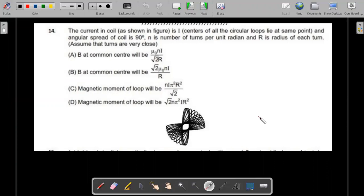For those who have already tried, here we go. There is a coil which is made of lot of circular loops whose center lie at the same point, assume that is origin. The coils keep curling around and there is an angular spread of 90 degrees. N is the number of turns per unit radian, capital R is the radius of each turn, and assume all the turns are very close.